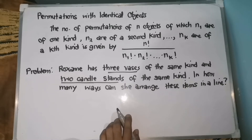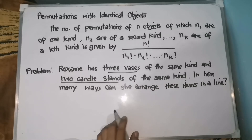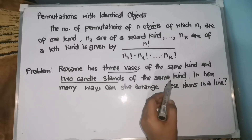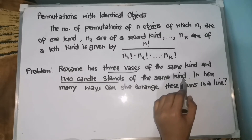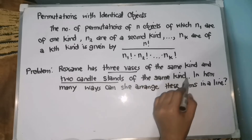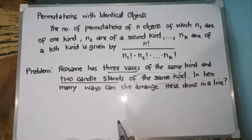Arrangement is taken into account, therefore it is under permutations. Identical objects kasi sinabi dito, so meron siyang clue word na 'of the same kind.'